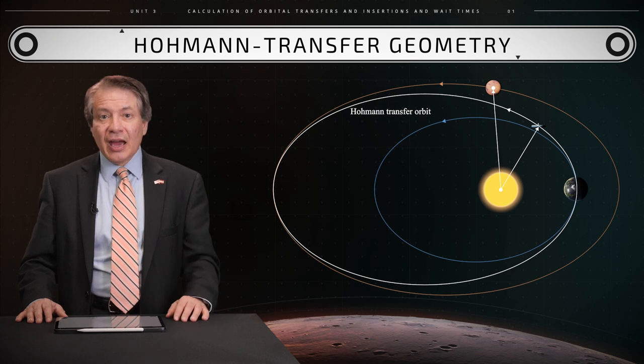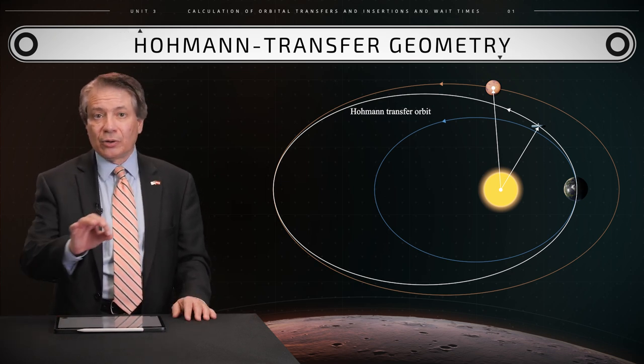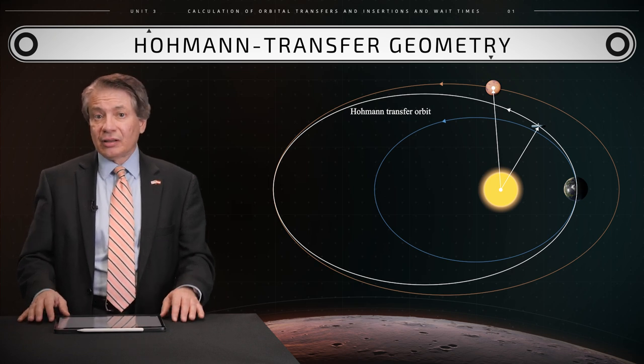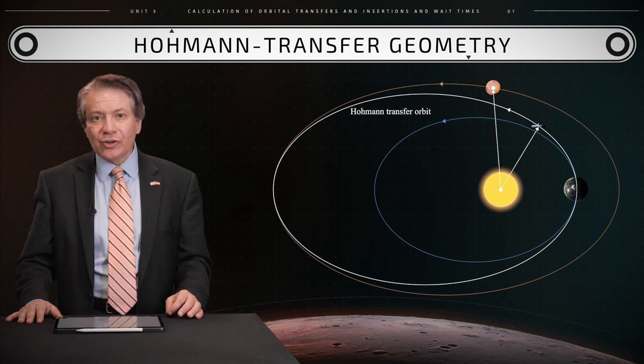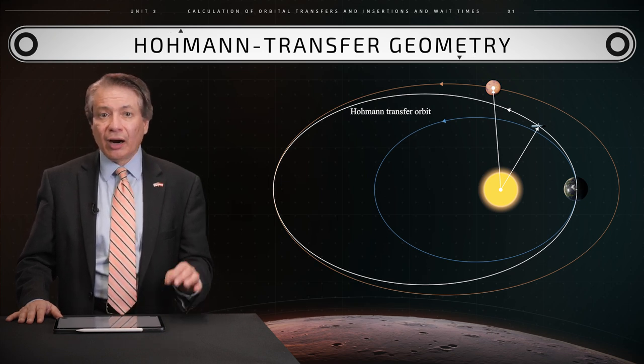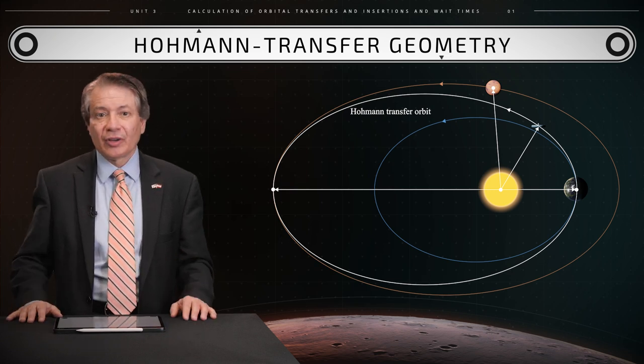Along this orbit, a spacecraft may leave the orbit of Earth and then reach the orbit of Mars. The construction criterion of this transfer ellipse is that the departure and arrival points are on opposite ends of a straight line.